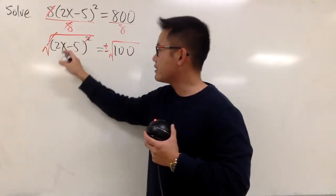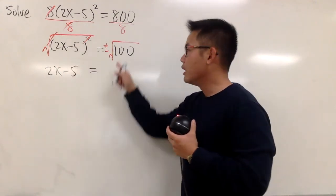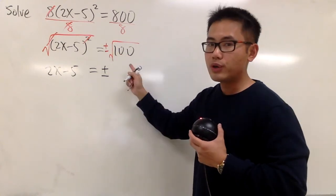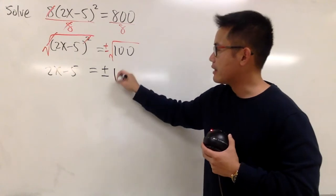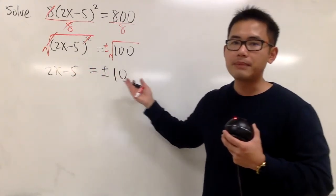On the left-hand side, though, we will have 2x minus 5, and that's equal to plus minus square root of 100. We can work this out. This is just a nice number, 10. So that means we have 2x minus 5 is equal to plus minus 10.